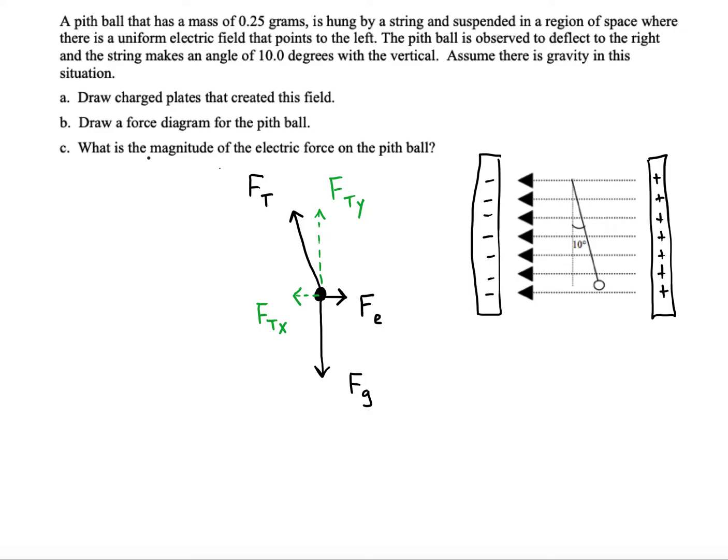All right, we're asked to find the magnitude of the electric force on this pith ball. So first of all, what's the sign of the charge on the pith ball? Well, something's causing it to want to pull to the right. So it must be a negative because negatives would be attracted to positives.